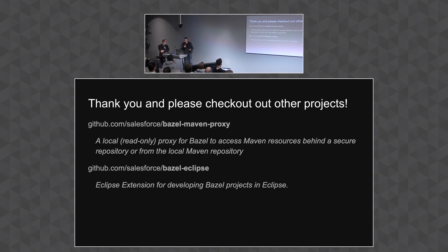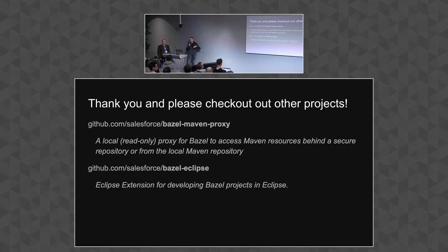Question: how do the build times of Bazel compare to ANT? That's difficult to compare because when our project was in ANT, that was five years ago, and now it's in Maven. The build time from our Maven monolith compared to the Bazel monolith was cut in half. But we also realized a lot of this depends on how the dependency graph looks. Maven spends a lot of time resolving transitives, so compilation in Maven takes longer because it has a much larger graph to resolve against. It's really tough to do an apples-to-apples comparison.